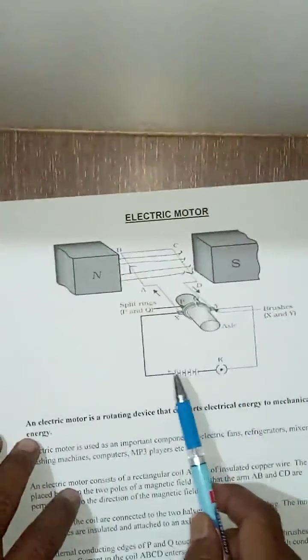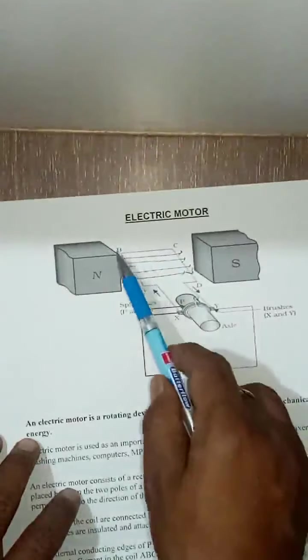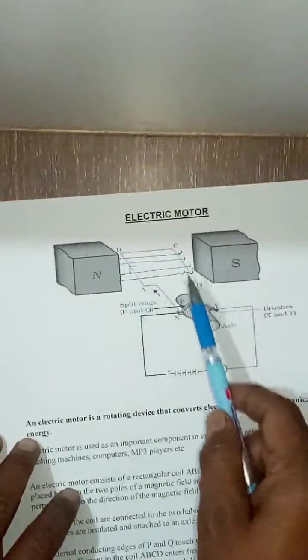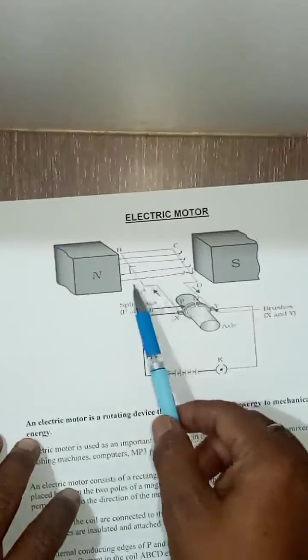The reversal of current also reverses the direction of force acting on the two arms AB and CD. That means if you change the direction of current, that means this positive terminal will be here and negative terminal will be here, then side AB will come upward and side CD will go down. In this condition it is going downward and this is coming upward.